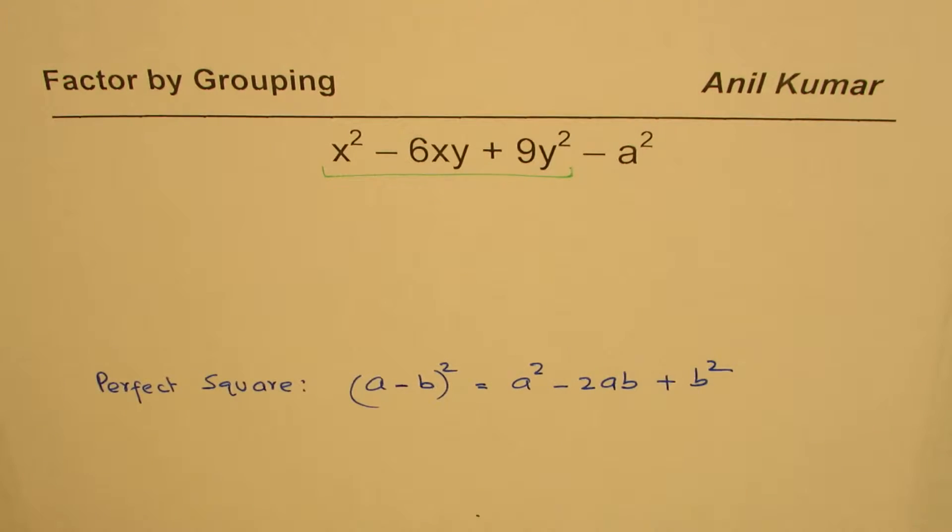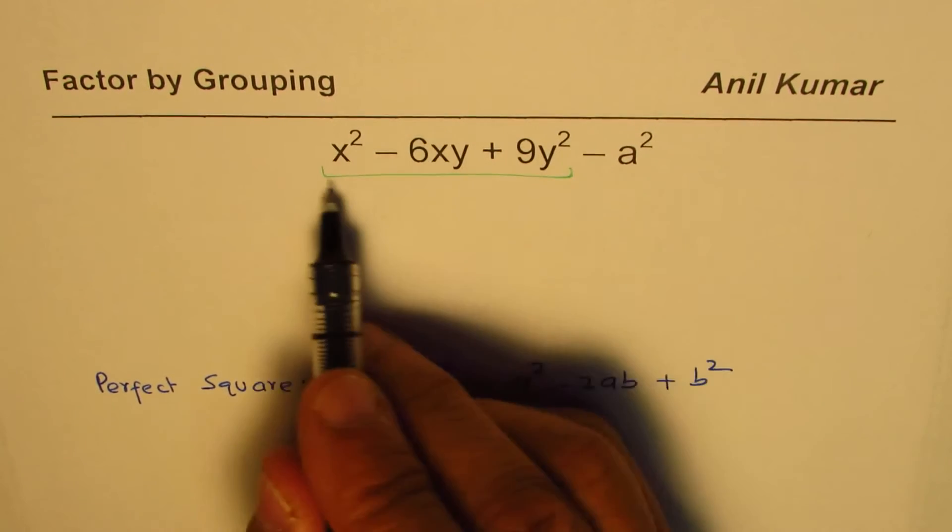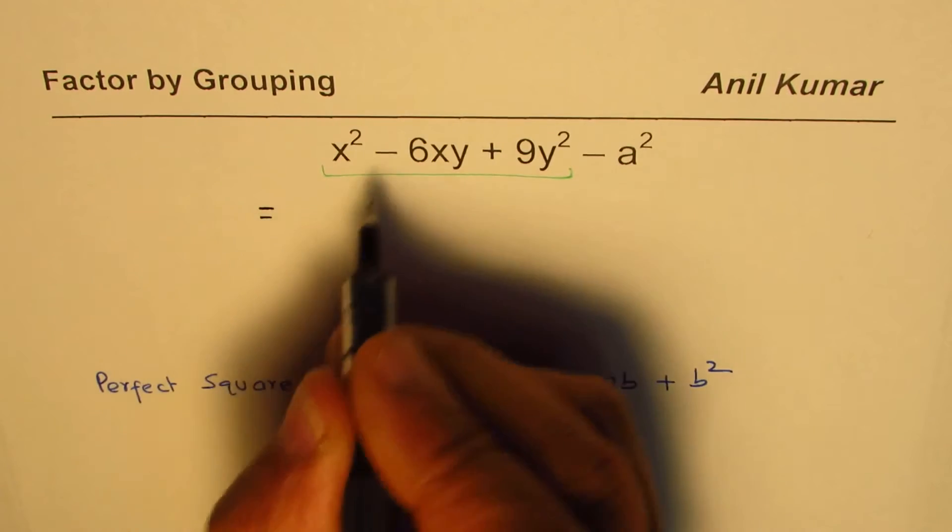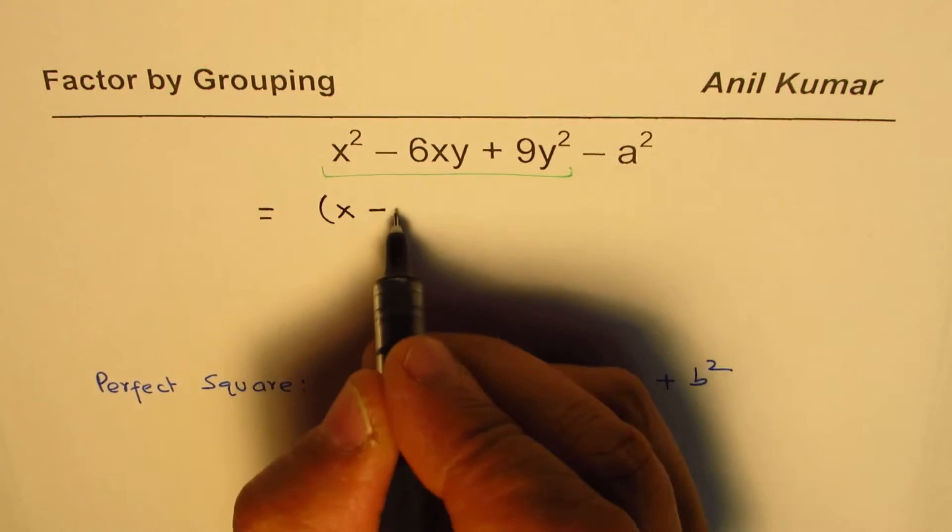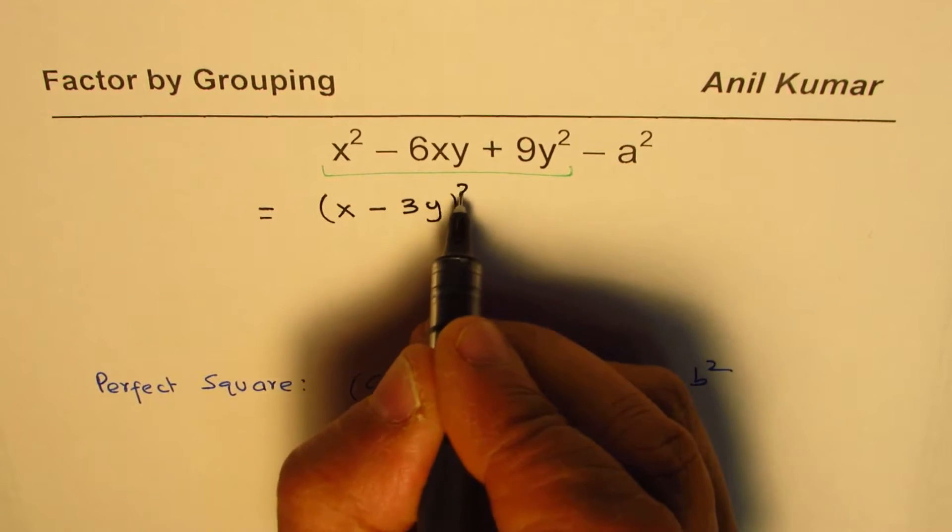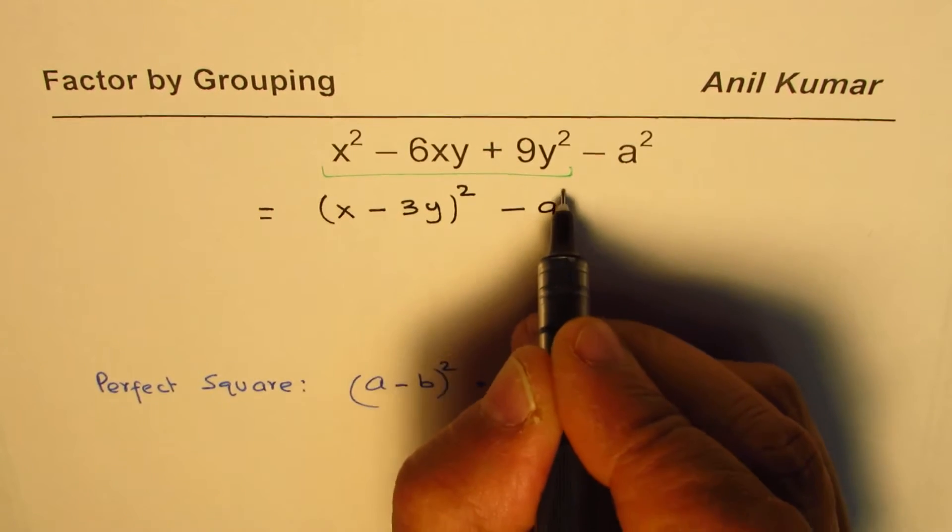We'll combine these terms and factor this as a perfect square. So let me rewrite this as x minus 3y whole square, and then we have minus a squared.